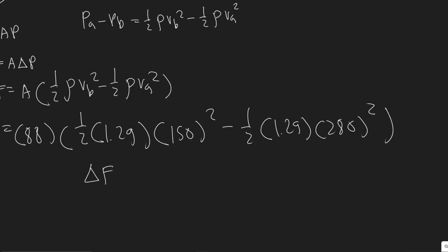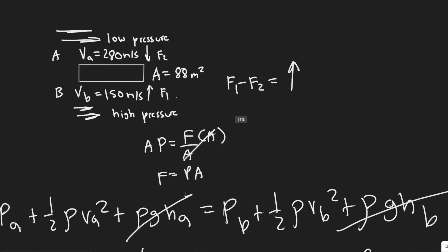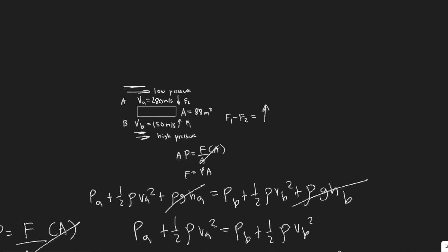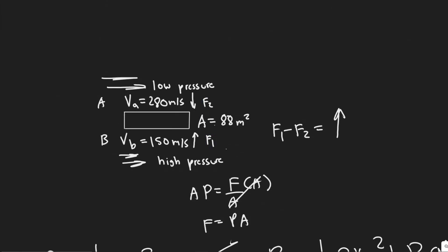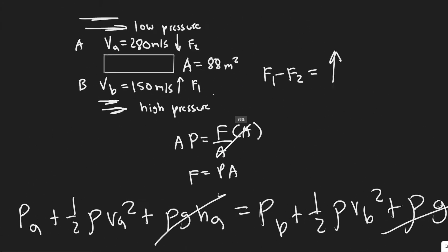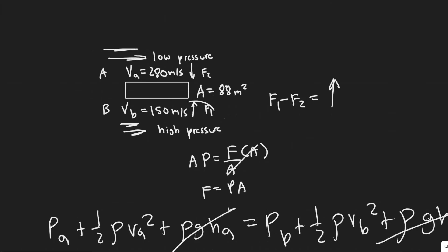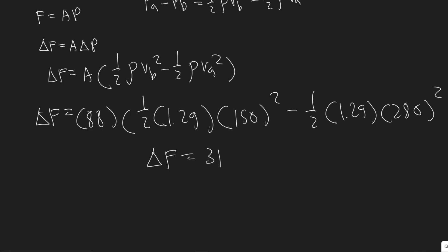When you compute this you get the change in force, and in this case it comes out negative because I did PA minus PB. But the force that's actually being exerted is just the absolute value of that. The reason is that we subtracted A minus B, but B is bigger — so you really should take B minus A. Either way, just note the force is positive and directed upward.